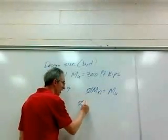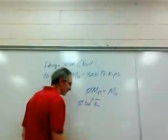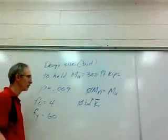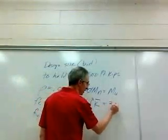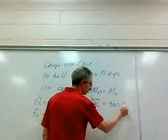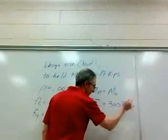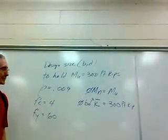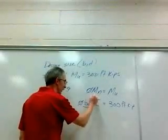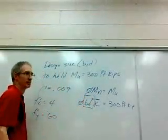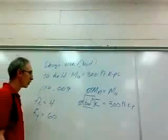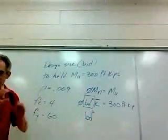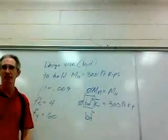We can write my design capacity like this: φBD² times k-bar is equal to MU. And we have to support 300 foot-kips. What I'm looking at here is this. So what I'll do is I'll solve for this term BD².